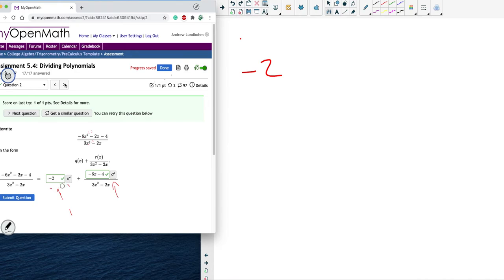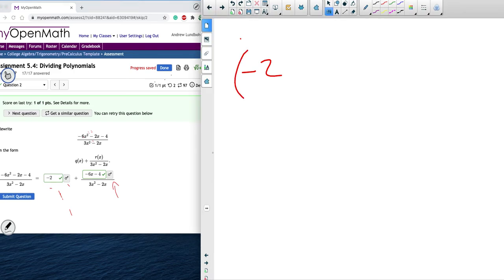All right. So, I put the negative 2 over on the board over here. Now, I'm going to take that negative 2 times the denominator. So, 3x squared minus 2x, the denominator right here. If I do that, I get negative 6x squared plus 4x.